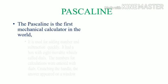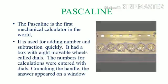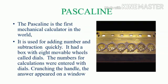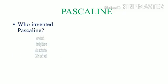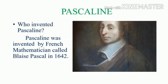Pascaline. The Pascaline is the first mechanical calculator in the world. It is used for adding and subtracting numbers quickly. It had a box with eight movable wheels called dials. Numbers for calculations were entered with dials, and by turning the handle, the answer appeared on a window. The Pascaline was invented by French mathematician Blaise Pascal in 1642.